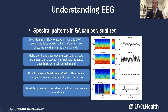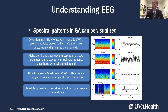This first pattern on the top is called delta-dominant slow-wave anesthesia, and this is a signature typically seen in patients who are anesthetized. Delta waves are low-frequency waves. On this compressed spectral array, there's a lot of intensity at around 5 hertz and even more — bright red — at about 1 hertz. If you look at the raw waveform to the right, you see high-amplitude, low-frequency waves.